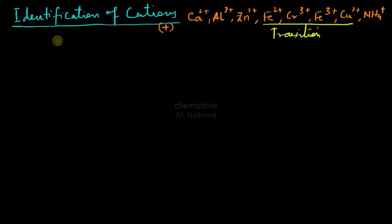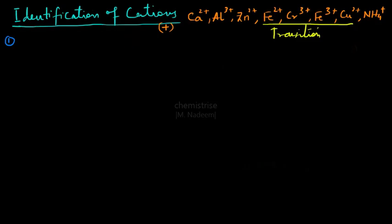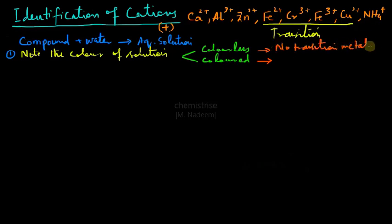Now let's see the different tests. Test number one is to dissolve the given compound in water and note the color of the solution. There are two possibilities: either we get a colorless solution, which means there are no transition metal ions present, or we get a colored solution, which means a transition metal ion is present.